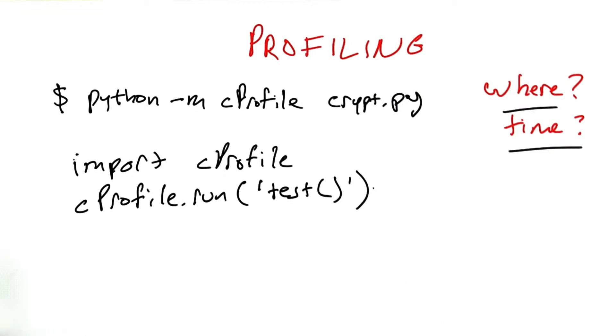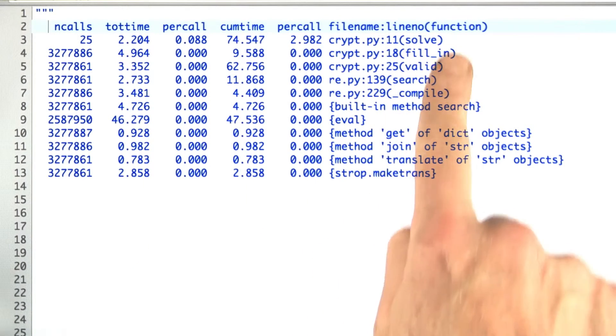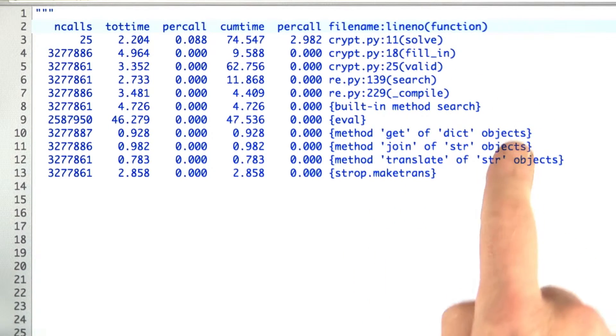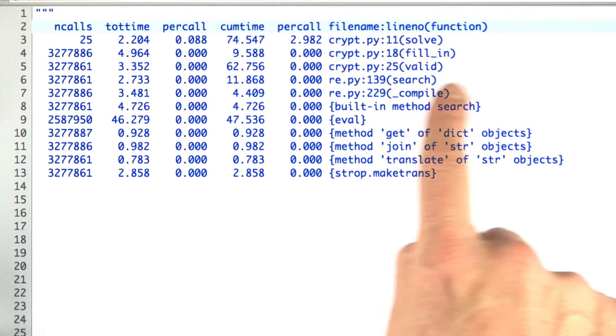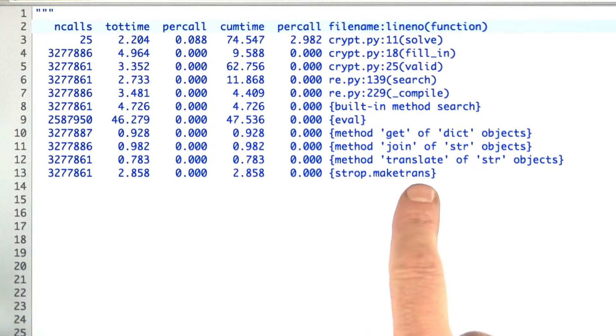Then you'll see output that looks like this. In the right-hand column we see the various functions that are being called. Within my crypt program there are three main functions: solve, fill in, and valid. Within the regular expression module I was calling search and compile. Then there are various other built-in methods of Python, such as the string matrons function, the eval function, and so on.